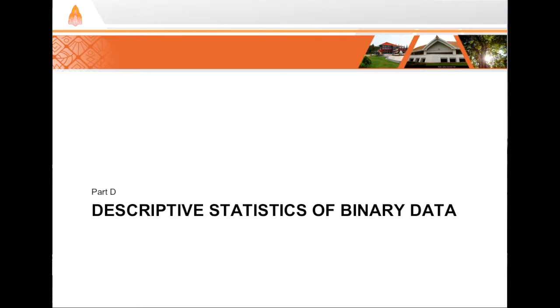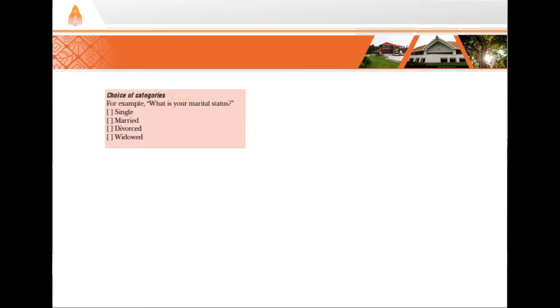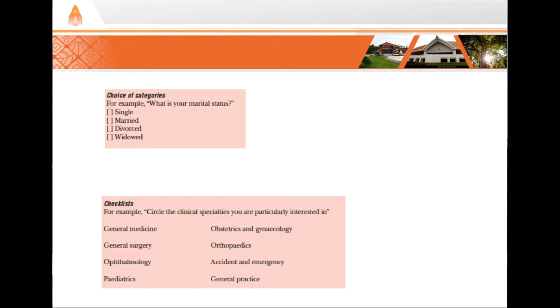So far in Parts A through C, we've talked about what descriptive statistics are and how to compute descriptive statistics for continuous data. But what happens when our dataset includes items that use question formats such as multiple choice, yes-no, or even a checklist? Those question formats generate categorical data.